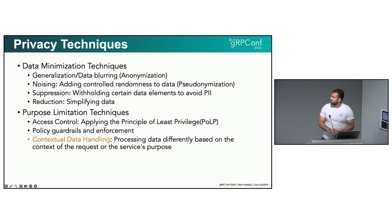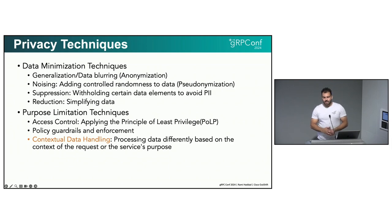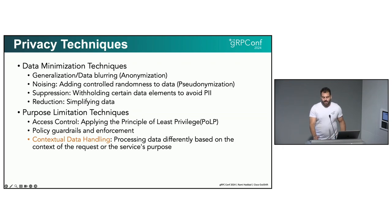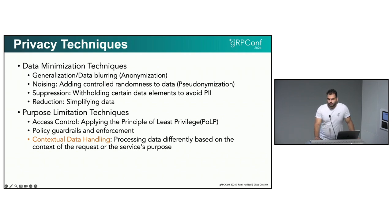Purpose limitation follows a lot of the security engineering principle of least privilege — we try to apply policy guardrails. Eventually what we want to get to is contextual data handling, which means that all data has various angles, and specific operations have very specific purposes. There's no one-size-fits-all view; there's a unique view to each request that we can guarantee or give to the user.